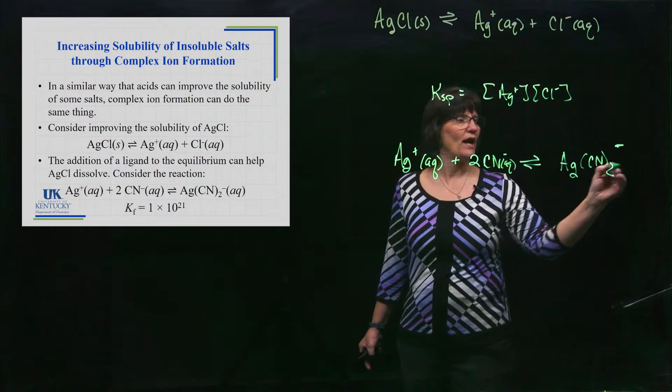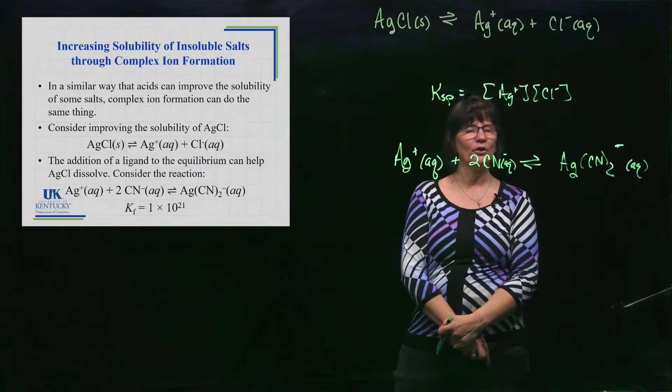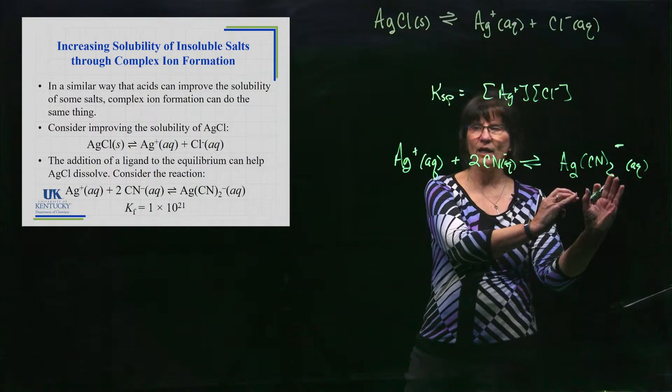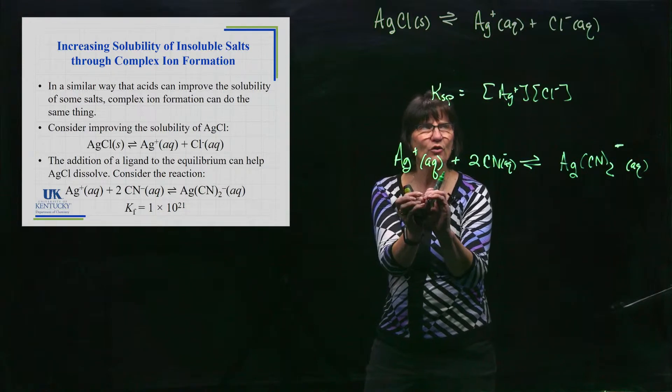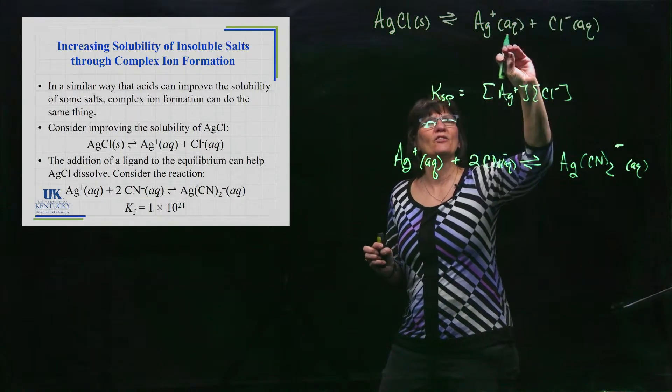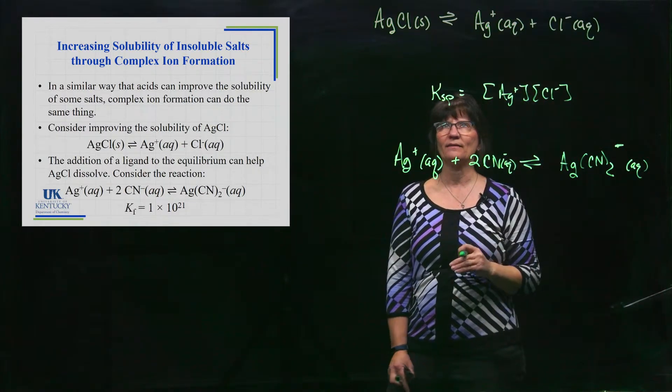So what we're going to do is, we are going to be able to have this reaction take place. Now look at the size of that Kf. Which way does this equilibrium lie? It lies very, very far to the right. So it's going to consume most of those silver ions. We get a little bit from this, and that guy takes them and forms this complex ion.